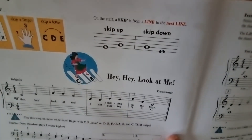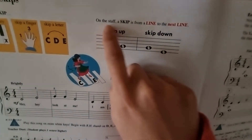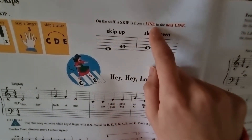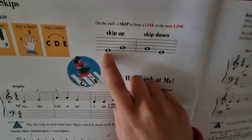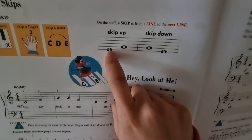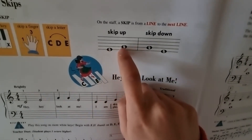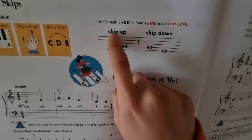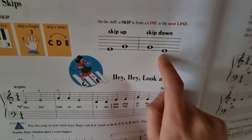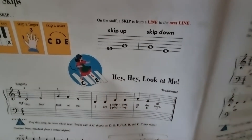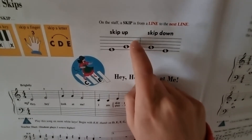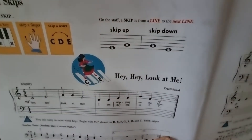On the staff, a skip means going from a line note to the next line note. This note is on line one, and we skip up to line two. If we're skipping down, we go from line two to line one. You can also skip from line two to line three, line three to line four, or line four to line five — those are all skips.